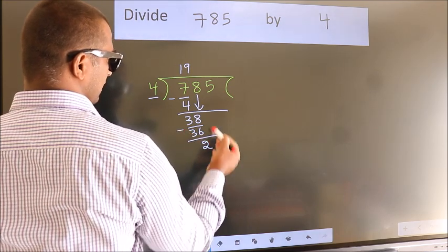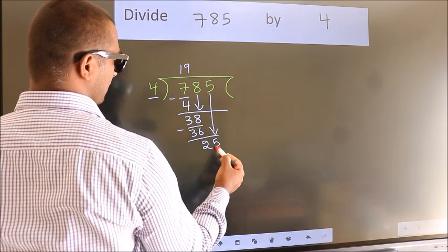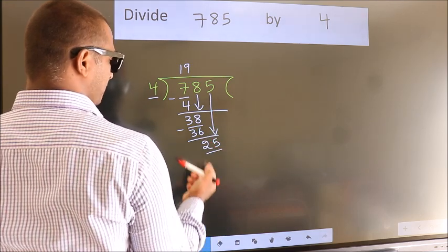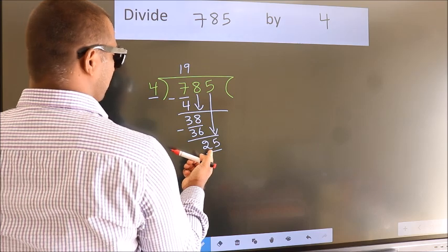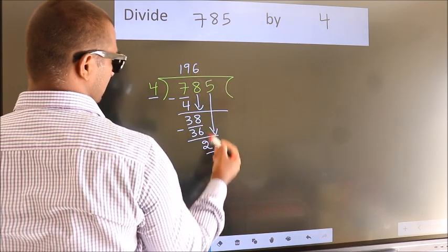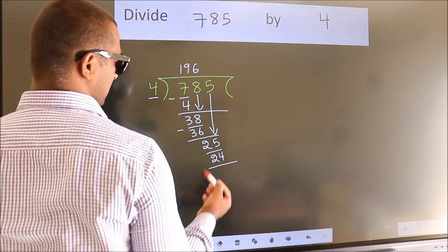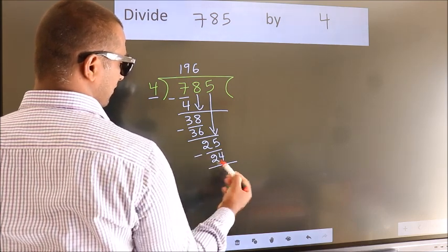After this, bring down the beside number. So, 5 down. So, 25. A number close to 25 in 4 table is 4, 6, 24. Now, we subtract. We get 1.